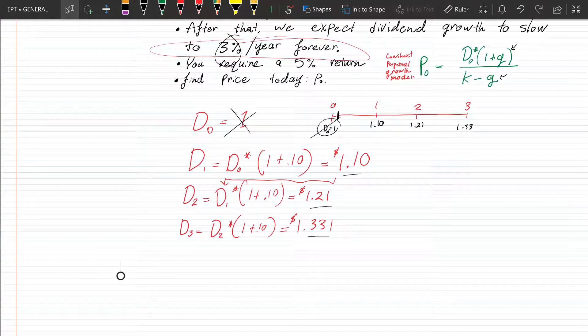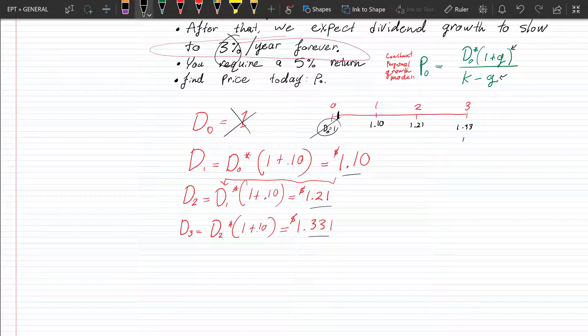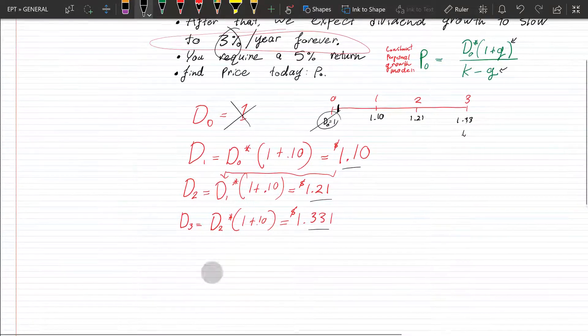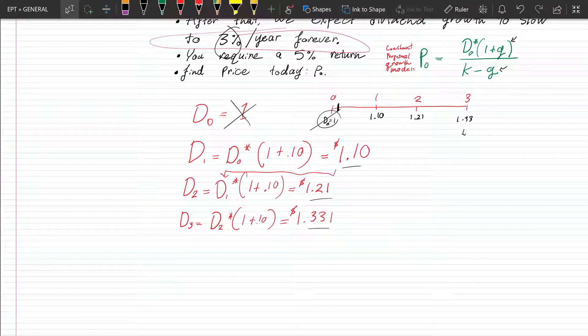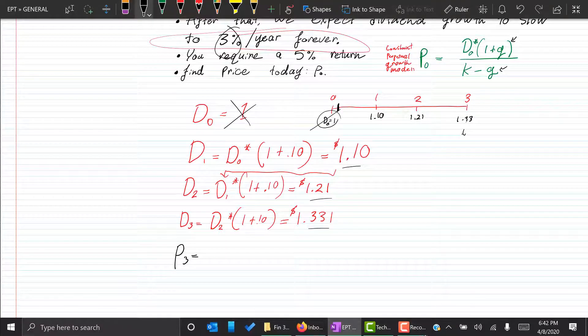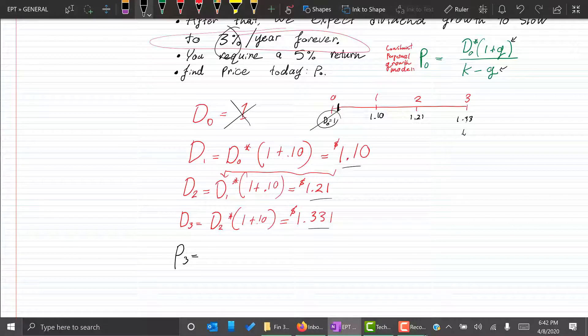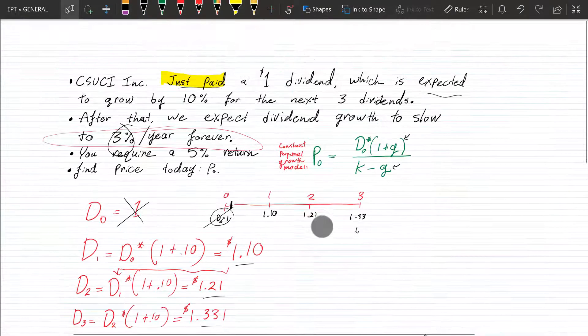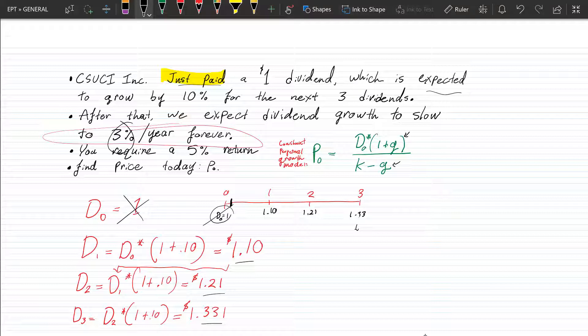So now what we're going to do is still in time period three, we're still in time period three. I want everyone to know that. We want to find the price at period three. And what we know from the constant perpetual growth model is that we can write this two ways. We can write this, I wrote it one way, this is also equal to just the formula. If I wanted to put P of zero equals D of, so dividend one, which is what this is, right?